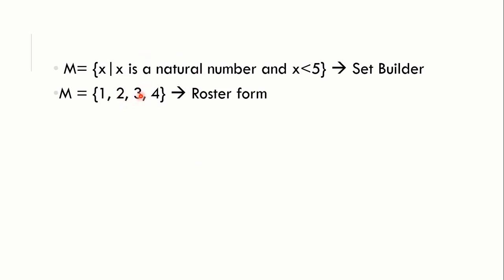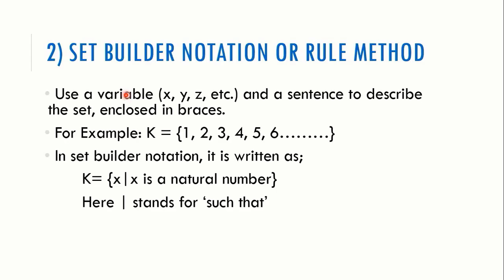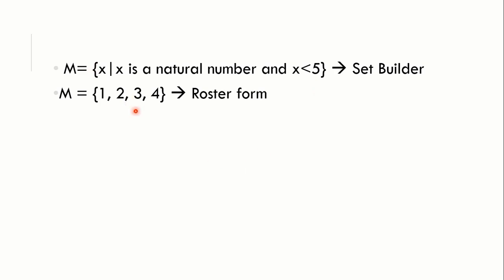Comparing both forms: x such that x is a natural number and x less than 5, versus {1, 2, 3, 4}. You can also write x less than or equal to 4, which is also correct. The simple idea of set builder notation is: a variable and a sentence. You should know how to represent a single set in different methods.